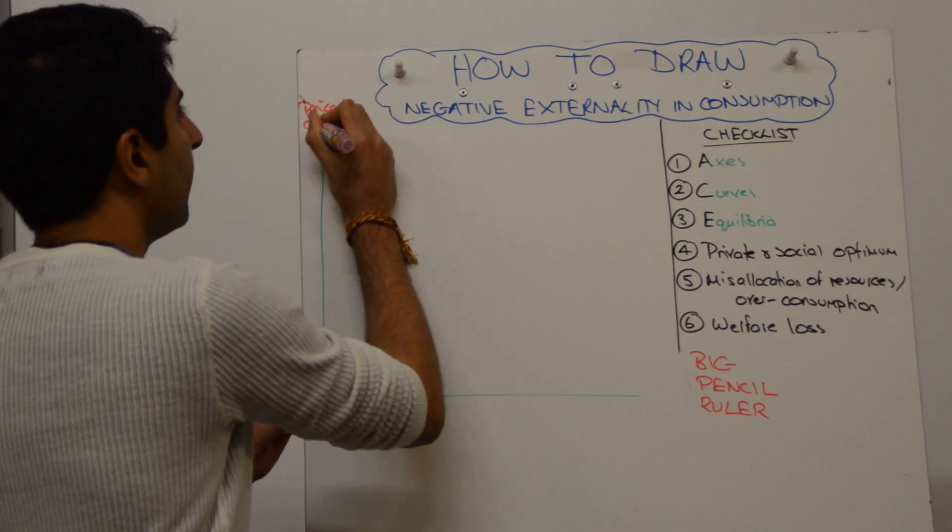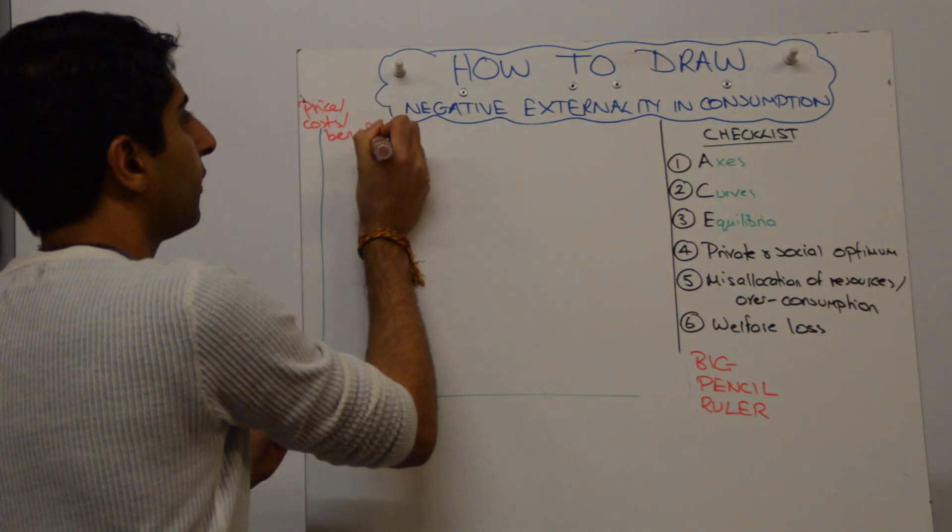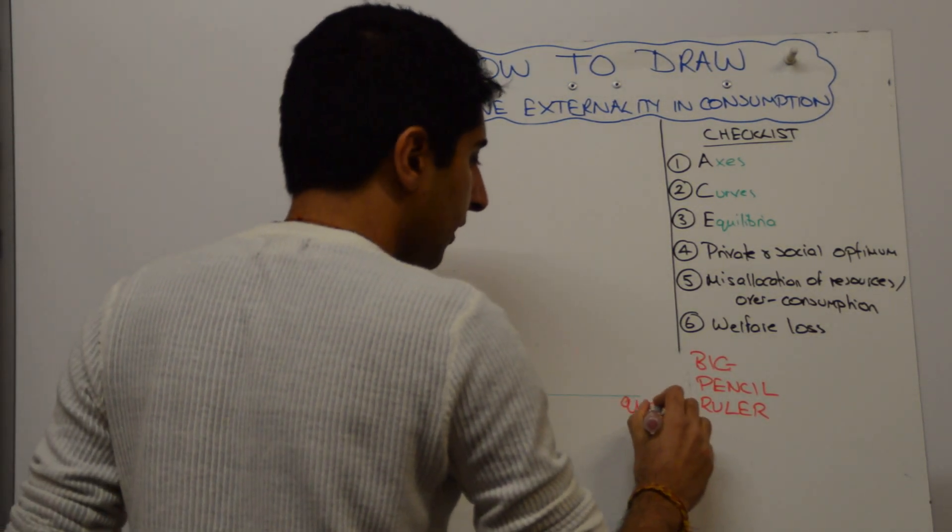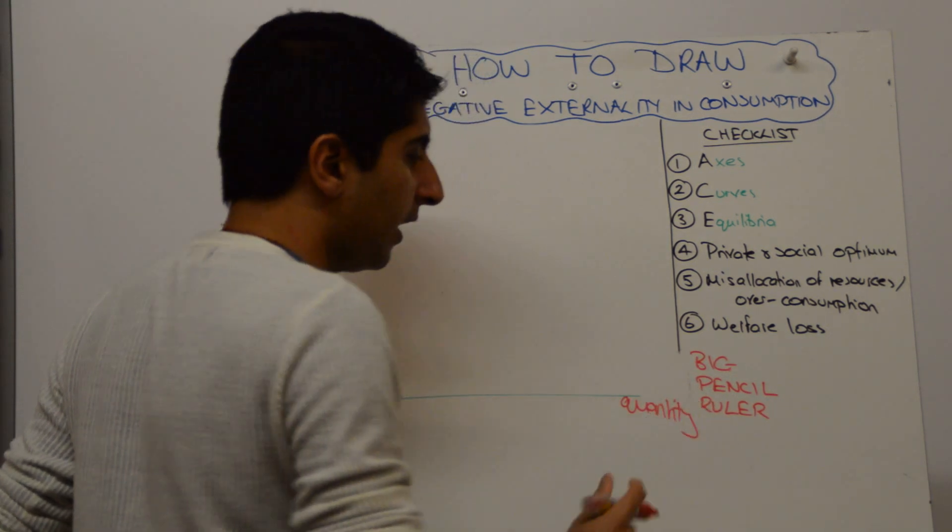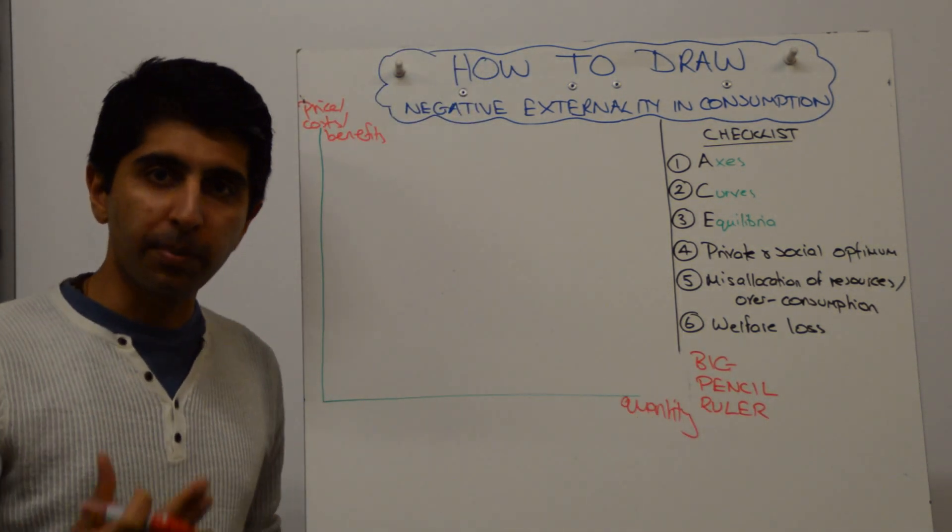With all market failure diagrams, you must label all three. Price, cost, benefits on the y-axis, quantity simply on the x-axis. If you know the market you're working with, then use that on the axis to apply better.